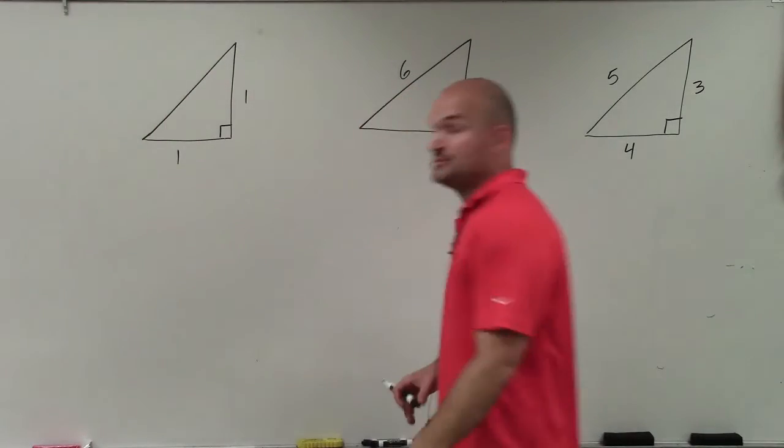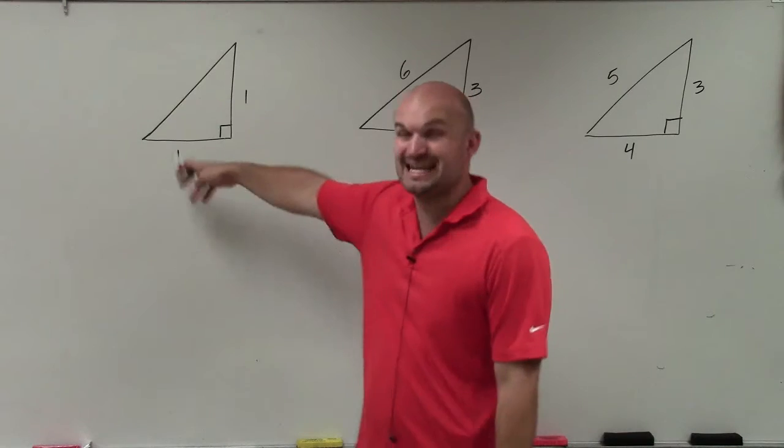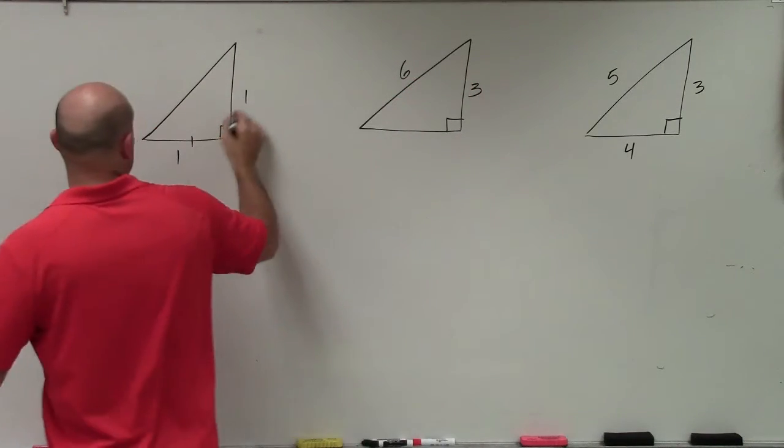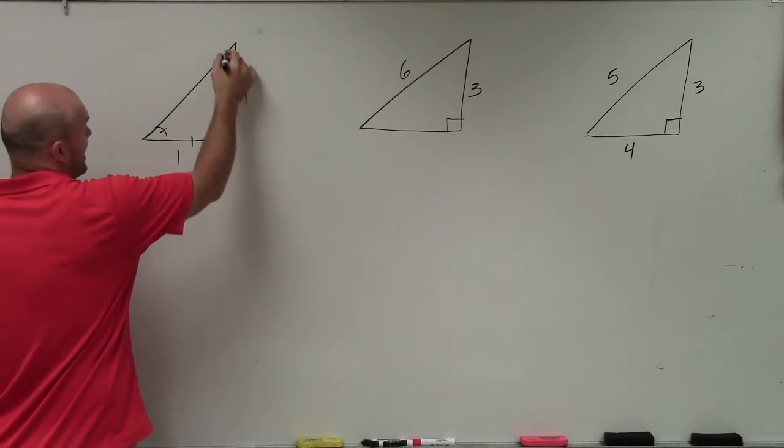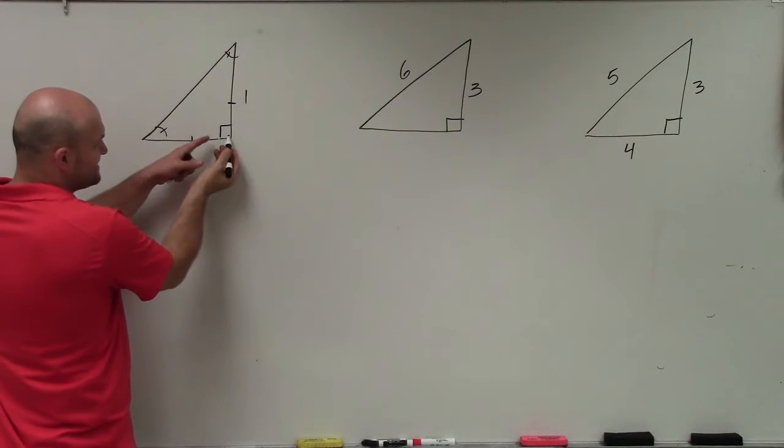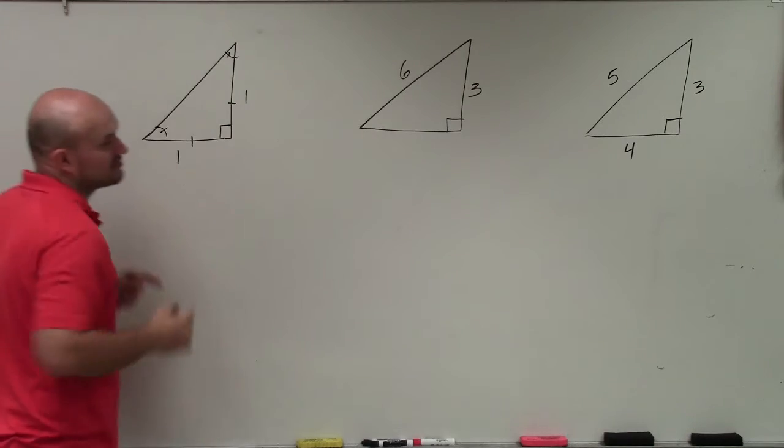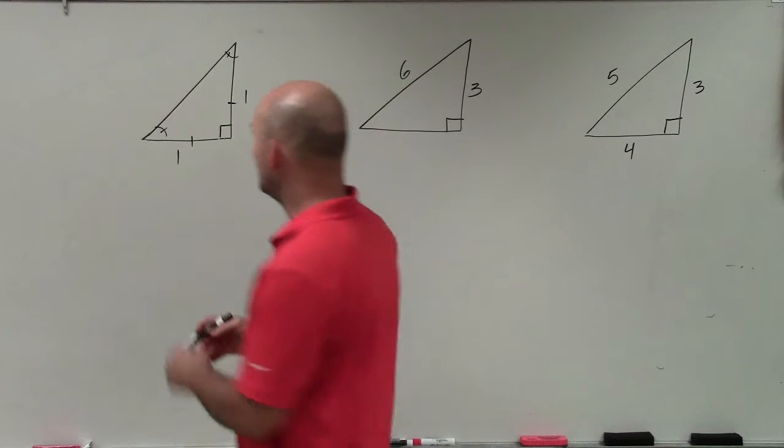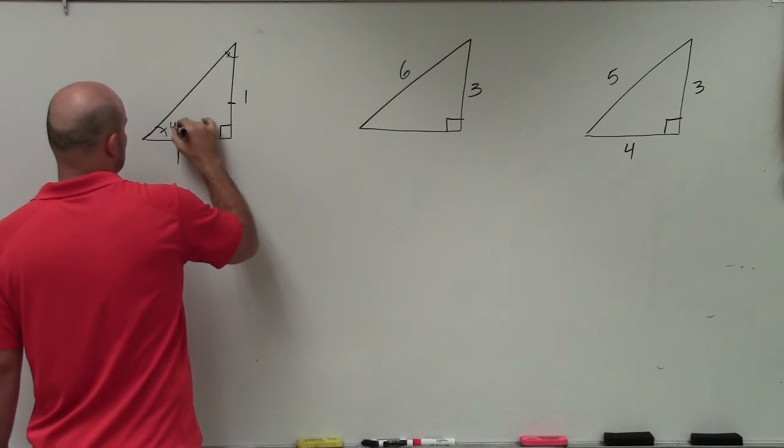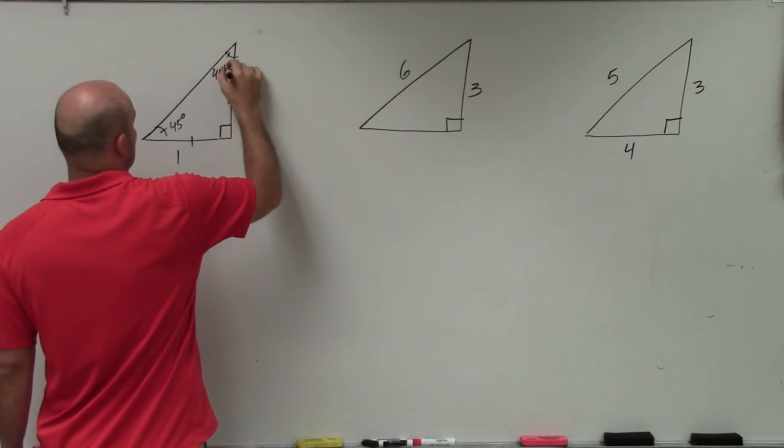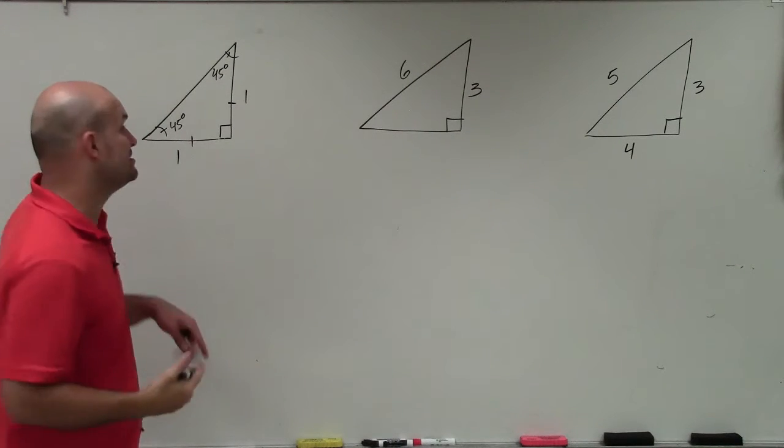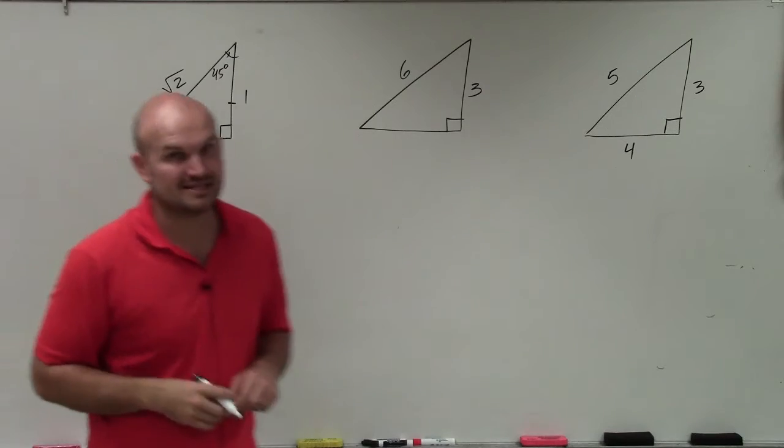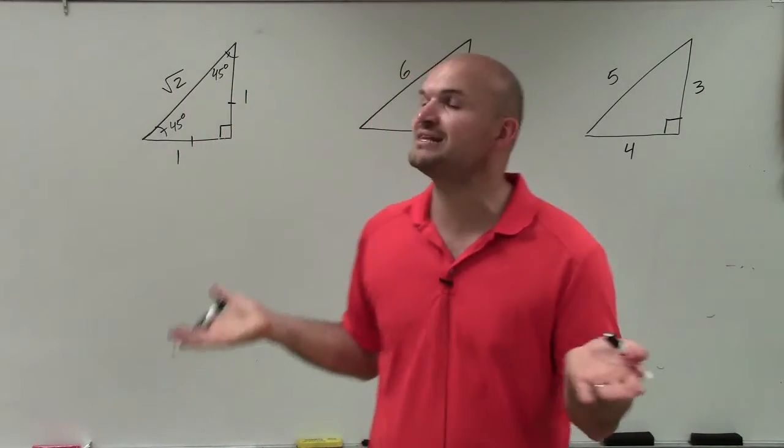I have three triangles here. But I wanted to start off with two triangles that we can easily figure out what their side lengths are, as well as determine what their angles are. The first two are what we call special right triangles. This is an isosceles triangle. Hopefully, you know that isosceles triangles, if you have two congruent sides, then it means these two angles are also congruent.